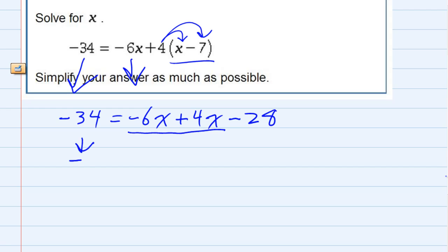Again, bringing down the negative 34 on the left. Those two terms, negative 6x plus 4x, I can combine them. The signs are different, so I subtract and keep the sign of the larger. I have negative 2x, bring down my minus 28.